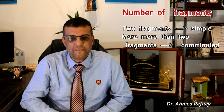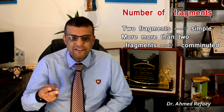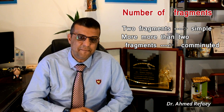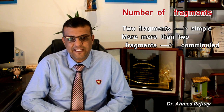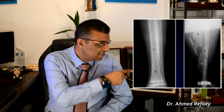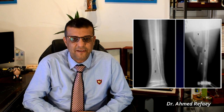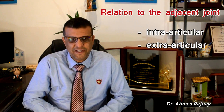Coming now to the number of fragments. According to the number of fragments, a fracture is either two fragments only — known as a simple fracture — or more than two fragments, which is called a comminuted fracture. As seen in these images: this is a simple fracture with two fragments, and this is a comminuted fracture with more than two fragments.